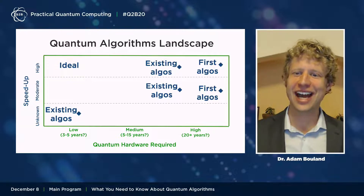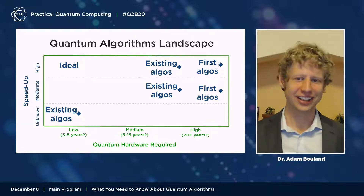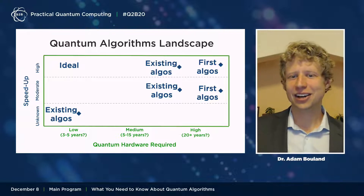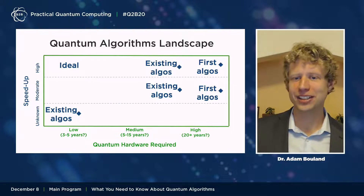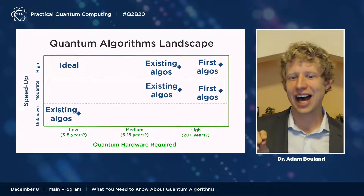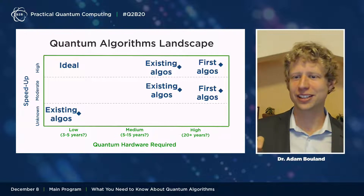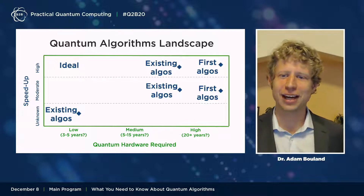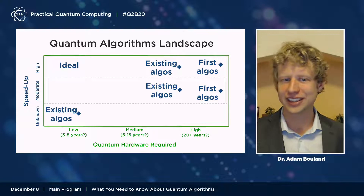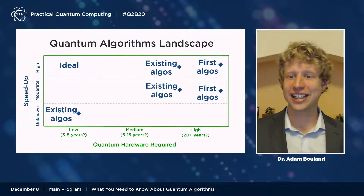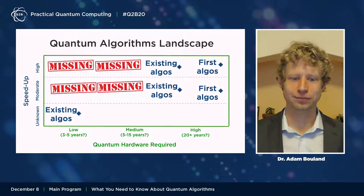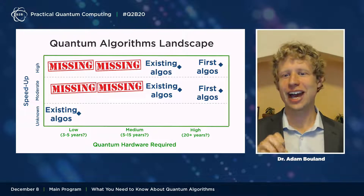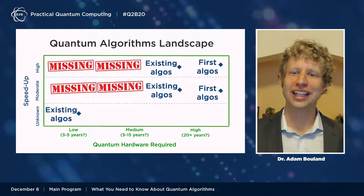Unfortunately, if you look at where existing quantum algorithms lie on this chart, they all lie either in the upper right-hand quadrant — algorithms with proven speedups but relatively high hardware requirements in terms of quality or quantity of qubits — or all of the algorithms we can run in the next few years are noise tolerant but heuristic in nature, with unknown speedup. So the upper left-hand quadrant is missing. We don't have algorithms with proven speedups that we can run in the next few years.